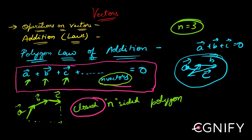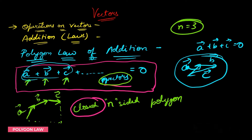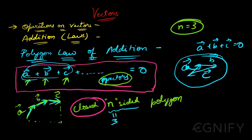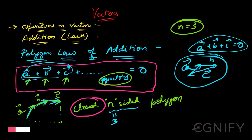So n equals three for a triangle — three vectors whose sum is zero. When you join a-bar, b-bar, and c-bar from head to tail, they must form an n-sided polygon where n is three. A three-sided polygon is a triangle, so those three vectors a-bar, b-bar, c-bar form a triangle — and that is all that Triangle Law was saying.